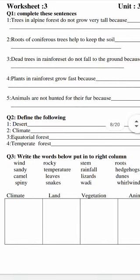The animals found in deserts are lizards, snakes, scorpions, foxes, and birds also live there. The camel is a very important desert animal — it is also called the ship of the desert, because in the desert, camels are mainly used for transportation and everything.